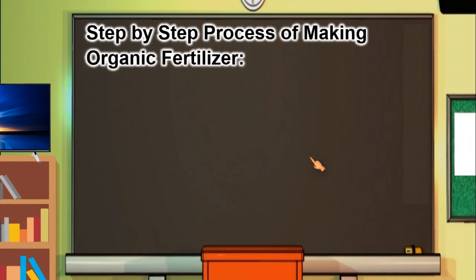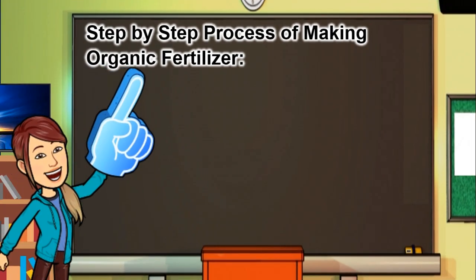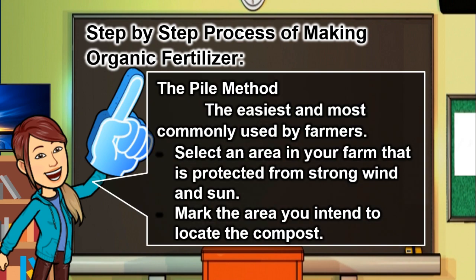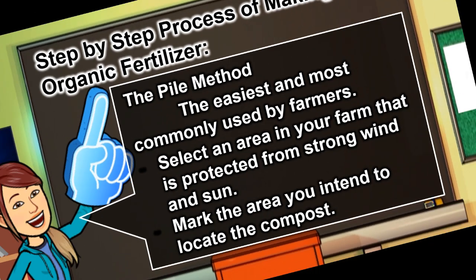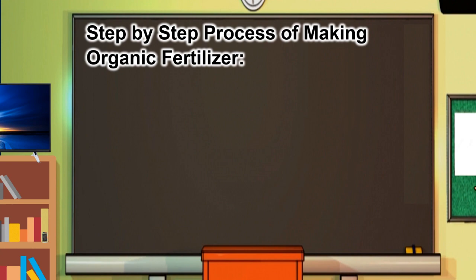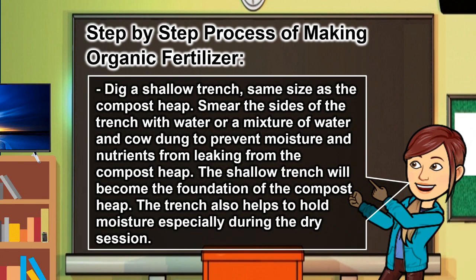Step-by-step process of making organic fertilizer using the pile method — the easiest and most commonly used by farmers. Select an area in your farm that is protected from strong wind and sun. Mark the area you intend to locate the compost. Dig a shallow trench the same size as the compost heap, and smear the sides with water or a mixture of water and cow dung to prevent moisture and nutrients from leaking. The trench also helps to hold moisture especially during the dry season.